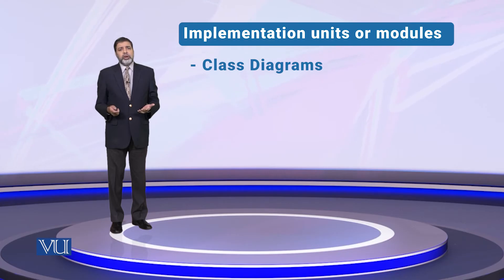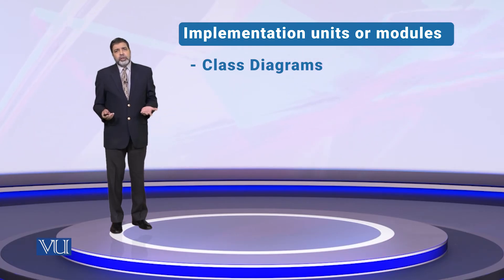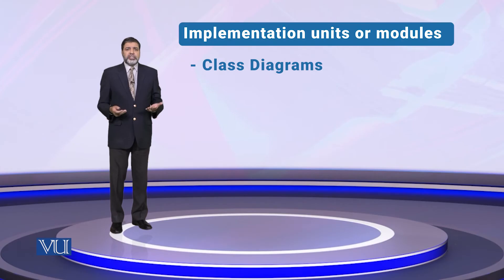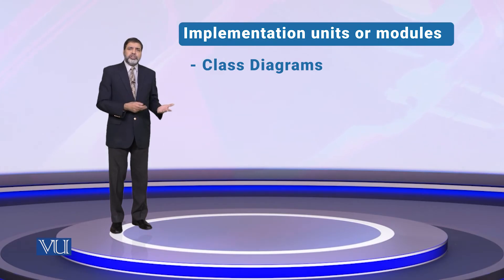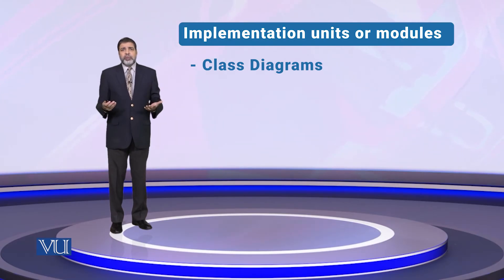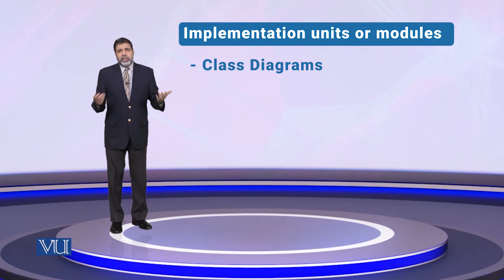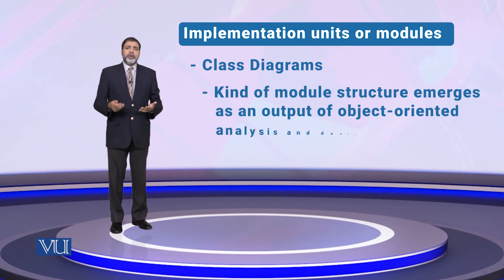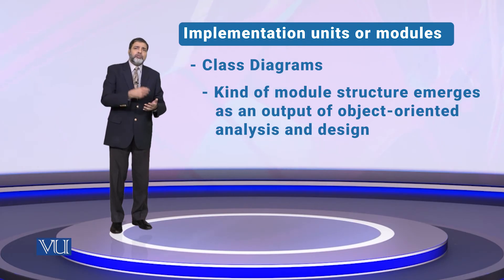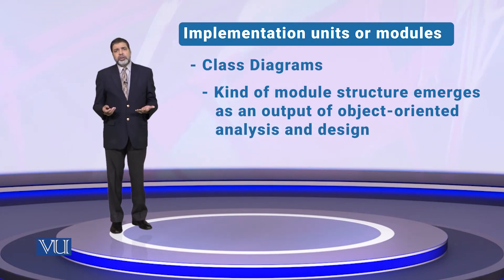There are many different types and examples of static structures. For example, we have class diagrams, which are also one kind of module structure. You define them in packages, and they emerge as an output of object-oriented analysis and design.